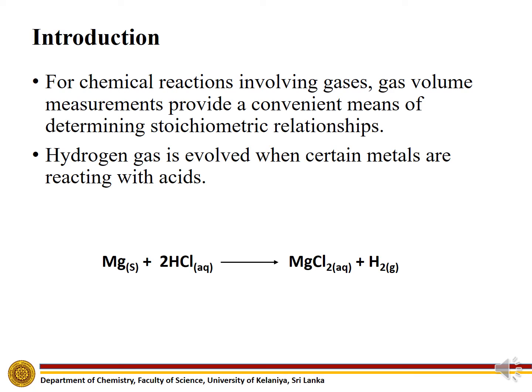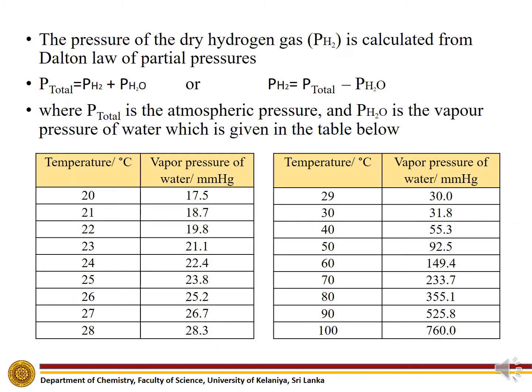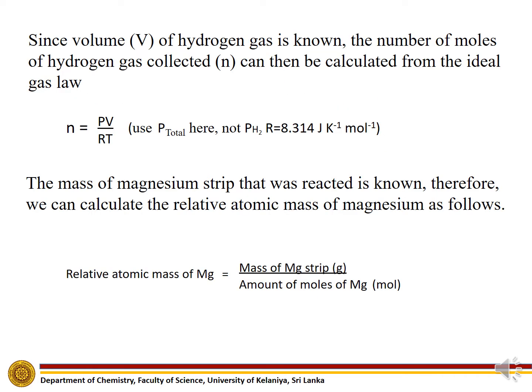Hydrogen gas evolves when certain metals react with acids. Magnesium reacts with HCl to form magnesium chloride and hydrogen gas. The pressure of the dry hydrogen gas is calculated from Dalton's law of partial pressures. Since the volume of hydrogen gas is known, the number of moles of hydrogen gas collected can then be calculated from the ideal gas law.